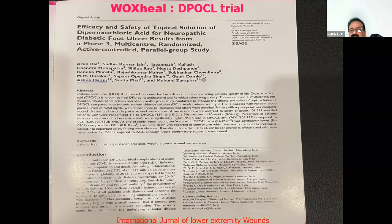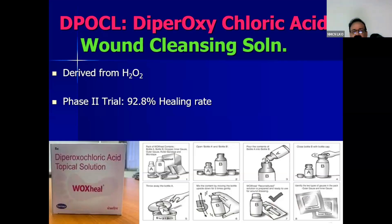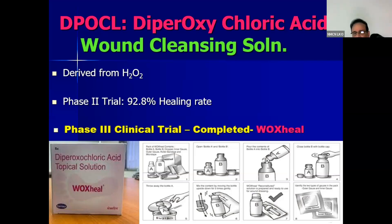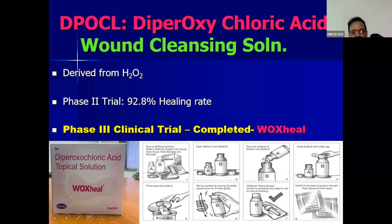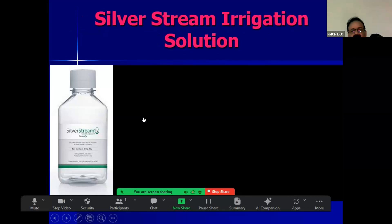DPOCl or diproxychloric acid in Voxyl is also available now in India. A paper published in the International Journal of Lower Extremity Wounds — I was one of the principal investigators of that trial. This wound cleansing solution was found to be very effective; it has been derived from hydrogen peroxide. Phase 2 trial showed 92.8% healing rate, and I was part of the phase 3 clinical trial. The molecule is now available as Voxyl.